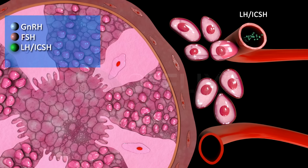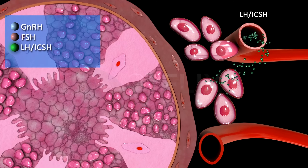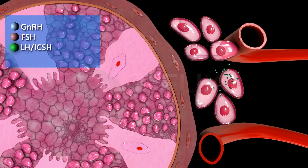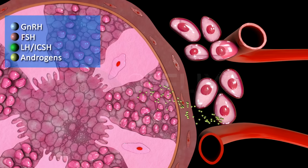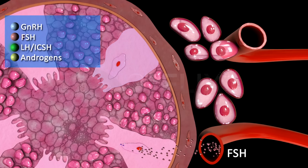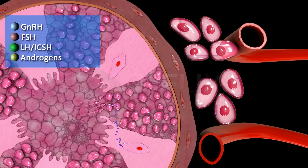Luteinizing hormone acts on the interstitial cells of Leydig, hence it is also called interstitial cell stimulating hormone, ICSH. The cells of Leydig, upon stimulation by ICSH, produce androgens, with testosterone being the chief androgen. Androgens stimulate the process of spermatogenesis. The follicle stimulating hormone stimulates the Sertoli cells to produce certain factors that help in the process of spermiogenesis.